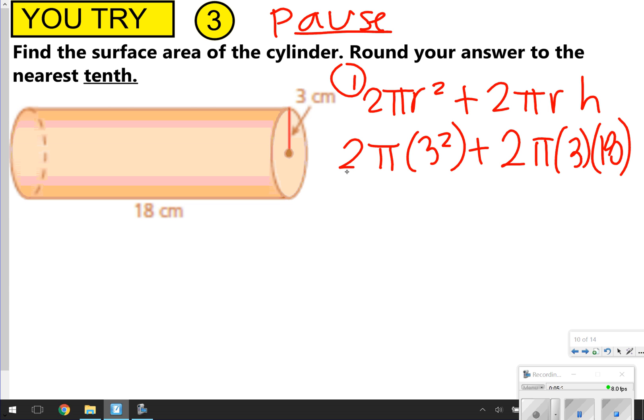I know that 2, I'm going to be multiplying my 2 times 3². 3² I know is 9, and 9 times 2 is 18. So that will be 18π on the left-hand side.